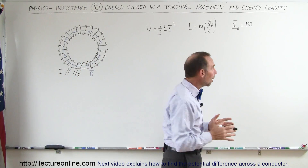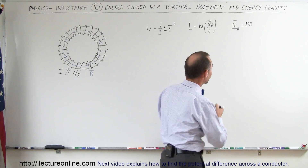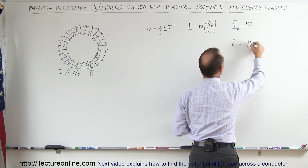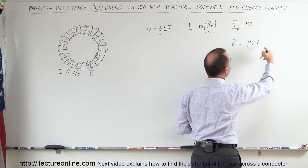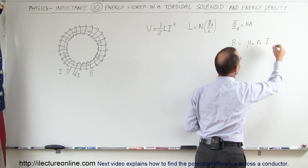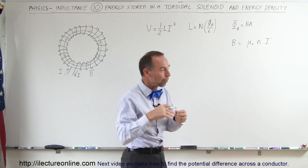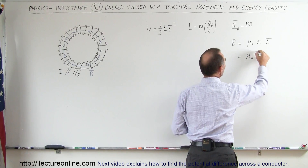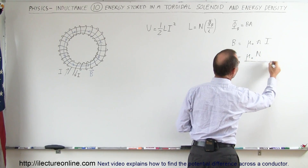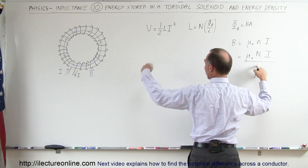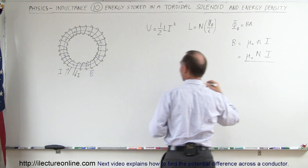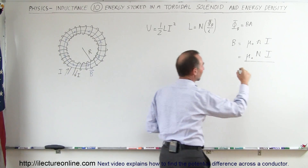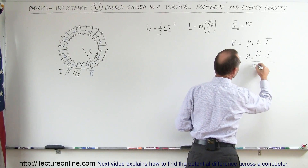The magnetic field of a toroidal solenoid can be calculated as follows. The magnetic field is equal to mu-naught times the number of loops per unit length times the current through the loops. The number of loops per unit length equals the total number of loops divided by the length, and the length of the toroidal solenoid is simply the circumference — 2πr, where r is the radius.